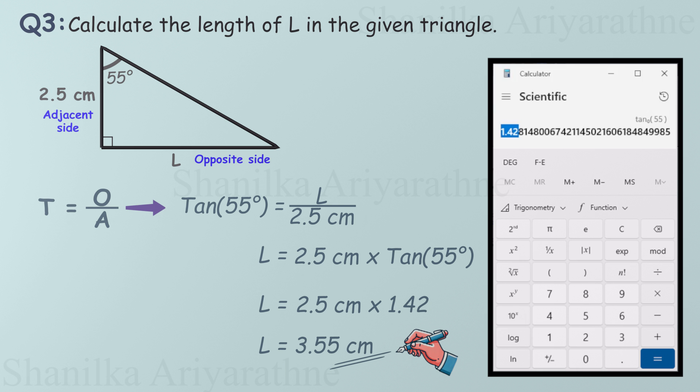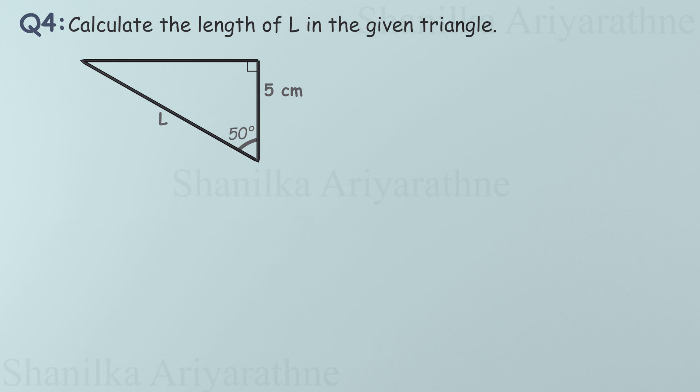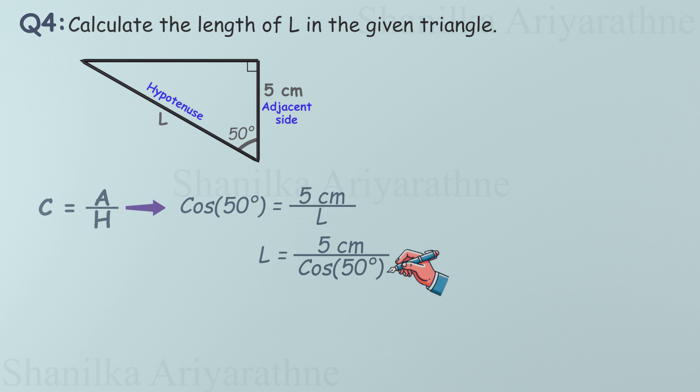Pretty simple, right? Let's keep going. This is our last problem. This time, we are given an angle and the length of the adjacent side to the angle. Our goal is to find the length of the hypotenuse. To do this, we can use the cosine ratio because it connects the adjacent side to the hypotenuse. Cos 50 is 5 divided by L. To find L, we divide 5 by cosine of 50.